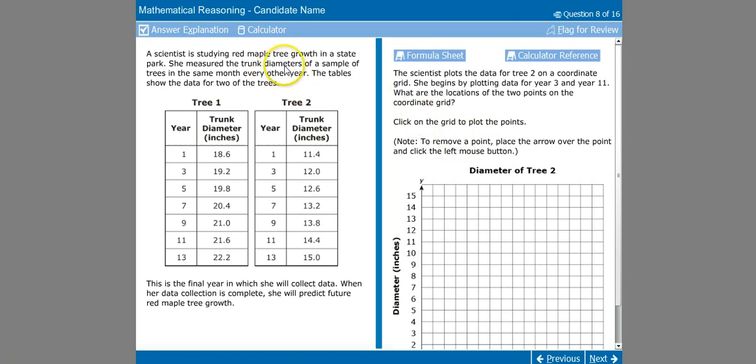A scientist is studying red maple tree growth in a state park. She measured the trunk diameters of a sample of trees in the same month every other year. The tables show the data for two of the trees. So we have tree one and tree two, and in each of those data sets, we have a column here telling the year and then a corresponding column telling what the trunk diameter was in that year for both of these trees.